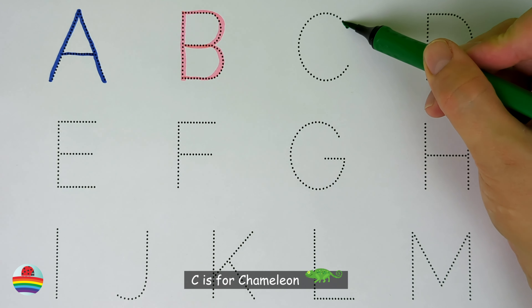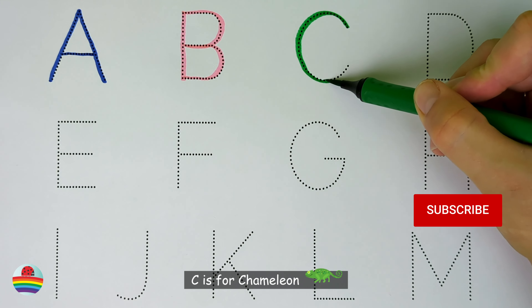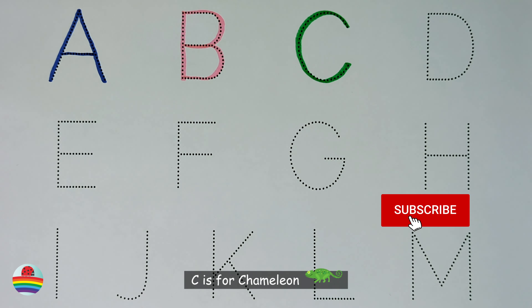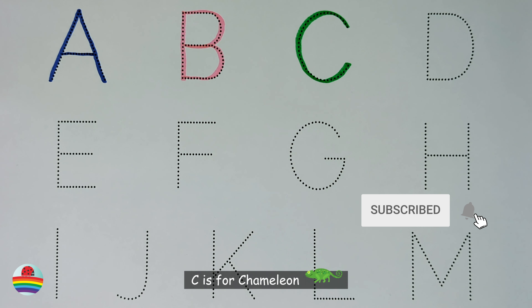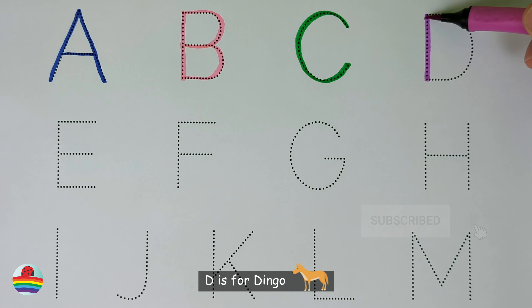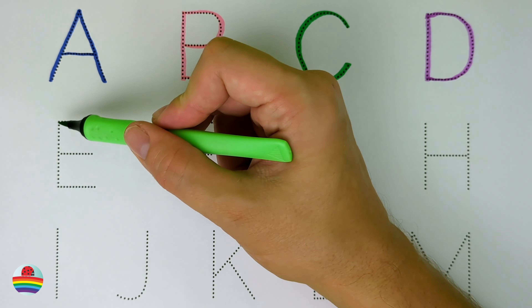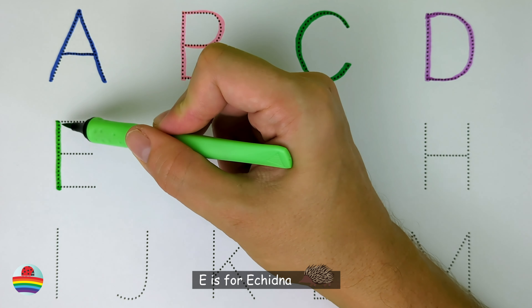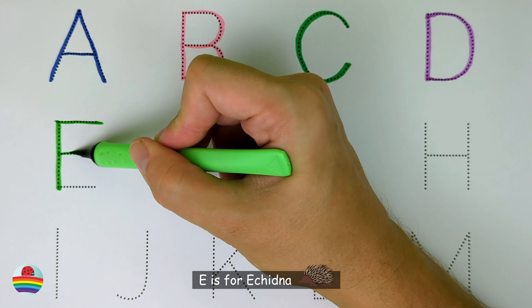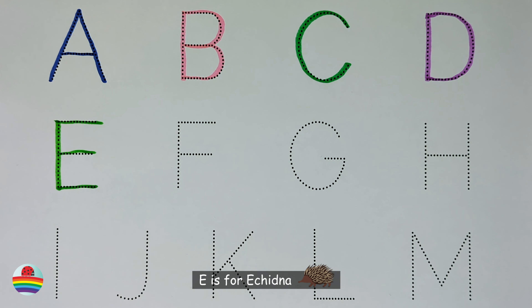C. C is for Chameleon. C. D. D is for Dingo. D. E. E is for Echidna. E.